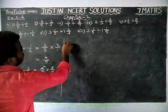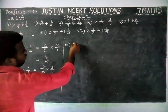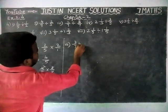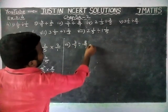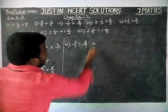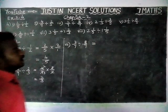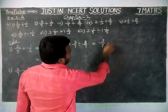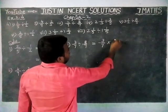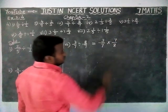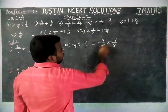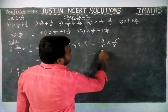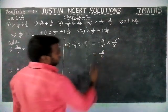Third question: 3/7 divide 8/7 is equal to — here we have to convert to reciprocal. So, 3/7 multiply 7/8. Here we can cancel 7: the 7s cancel, and the remaining is 3/8.